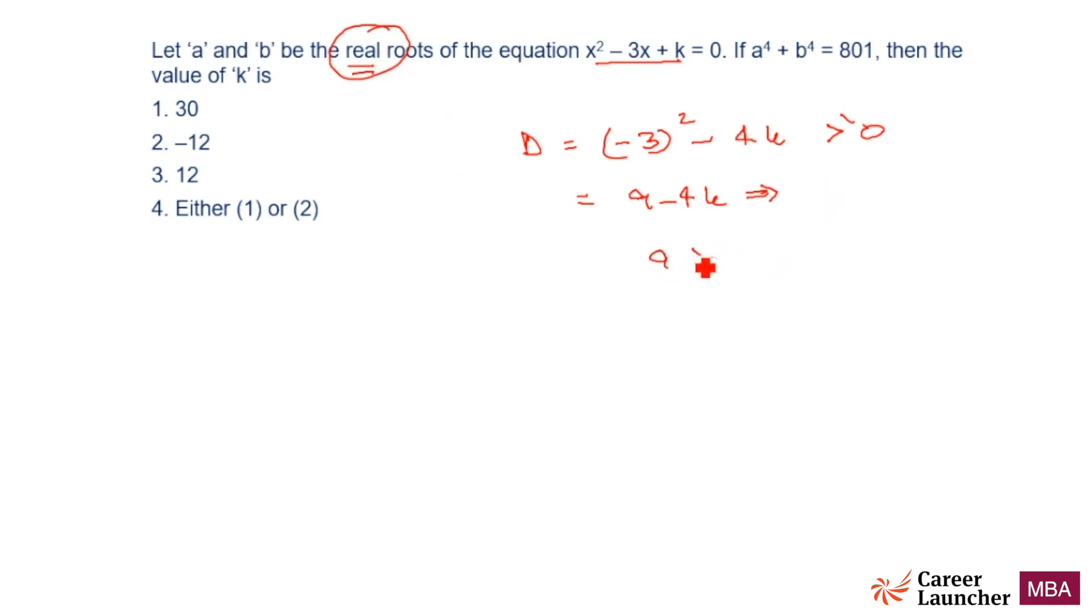9 minus 4k should be greater than or equal to 0, or 4k should be less than or equal to 9, or k should be less than or equal to 9 by 4.